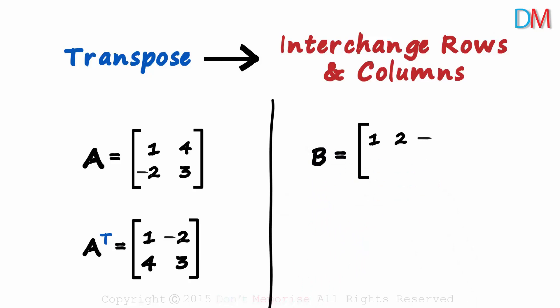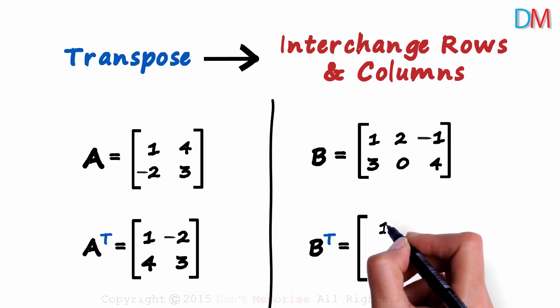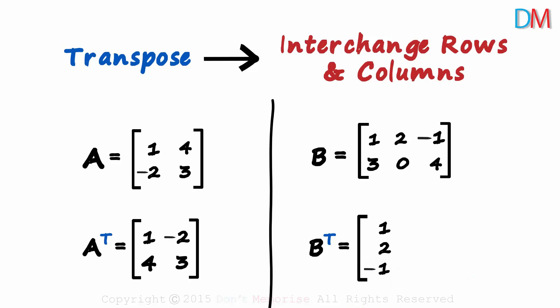So here's matrix B. I want you to try finding the transpose of matrix B. So the first row will become the first column of the transpose. The first row is 1, 2, minus 1. 1, 2, minus 1 will be the first column of B transpose.